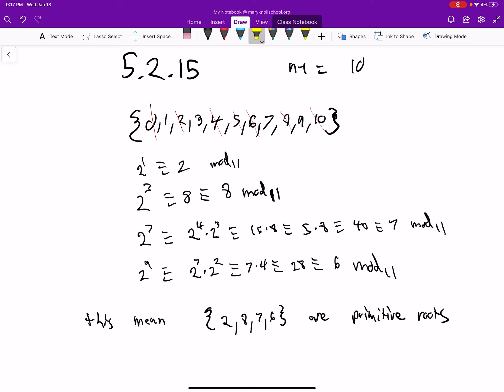Then you're looking at n minus 1, which n is 11. We're looking mod 11. So n minus 1 is 10.